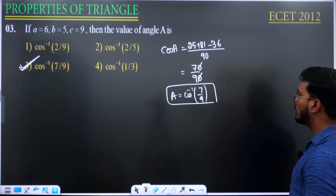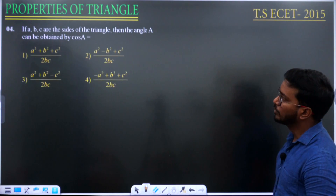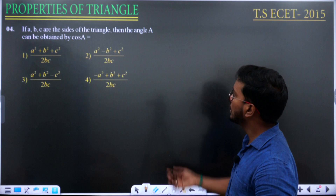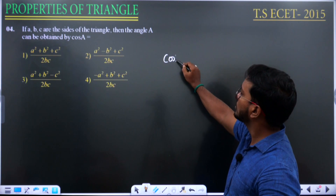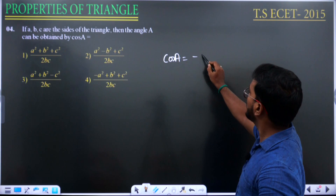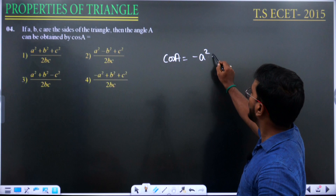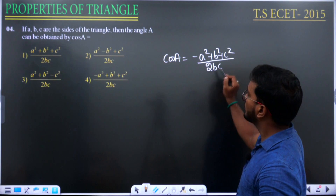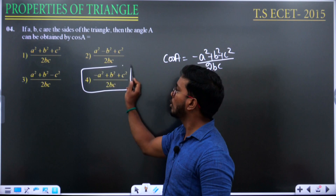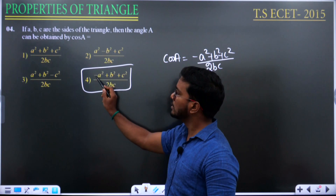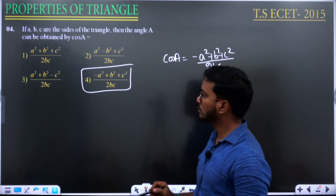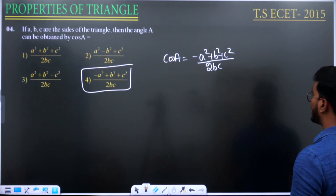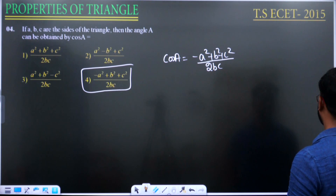Moving on to question 4: if a, b, c are the sides of the triangle and angle A is asked, this is a direct application of the cosine formula. Cos A = (b² + c² − a²) / 2bc — that is, cos A has minus a² while the other terms are positive. This is given in option 4.